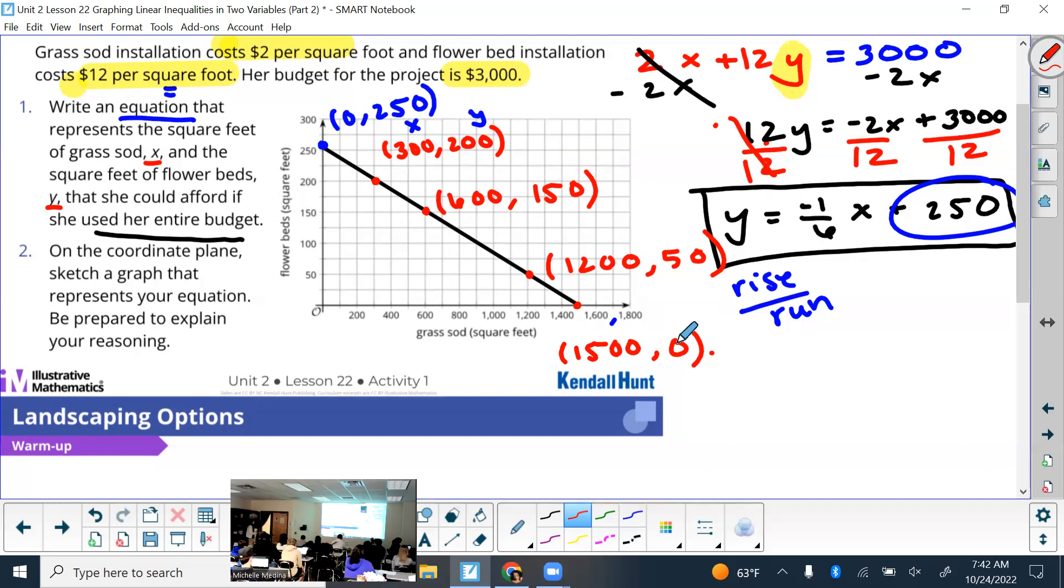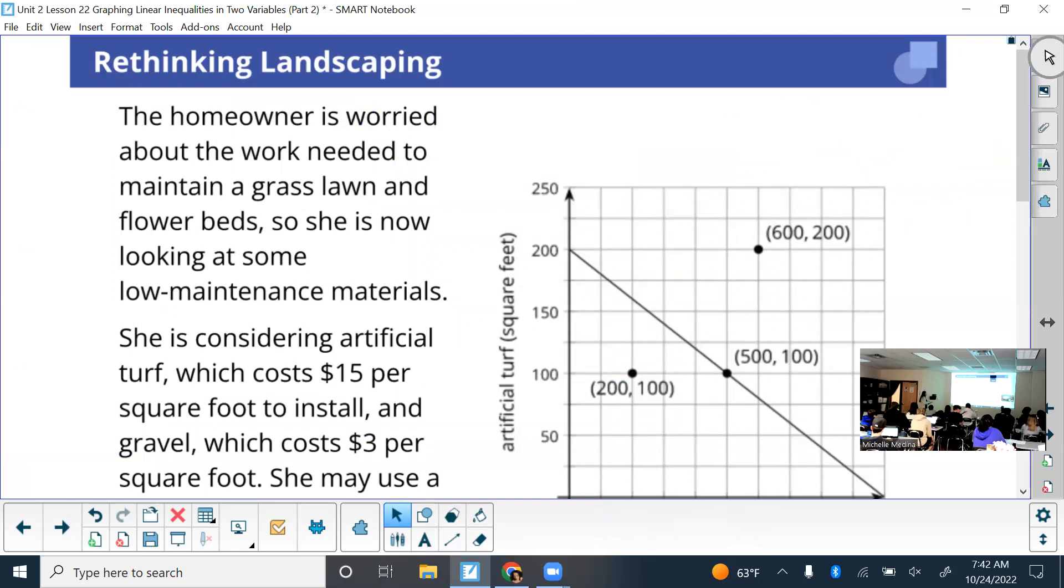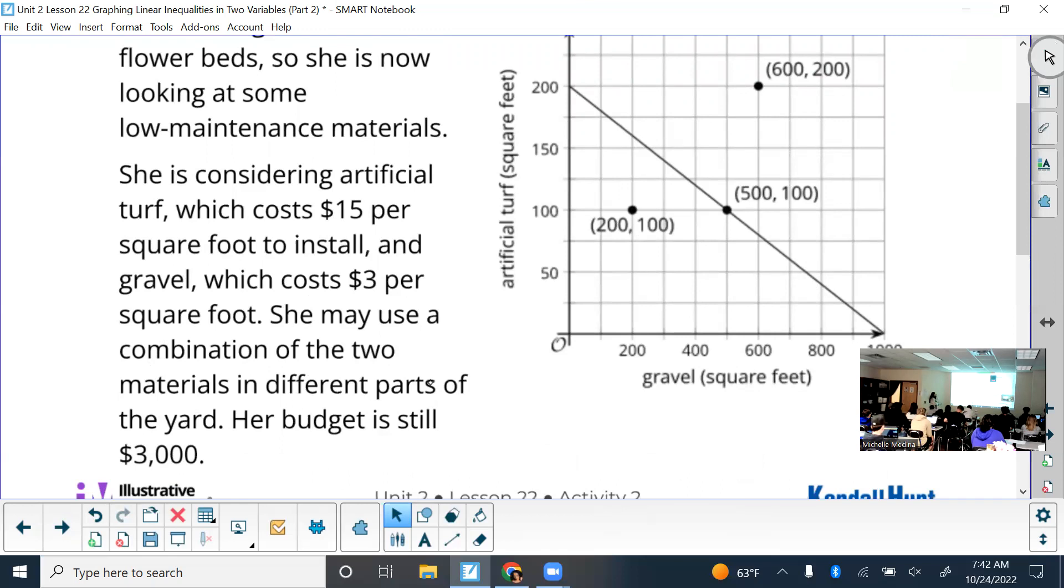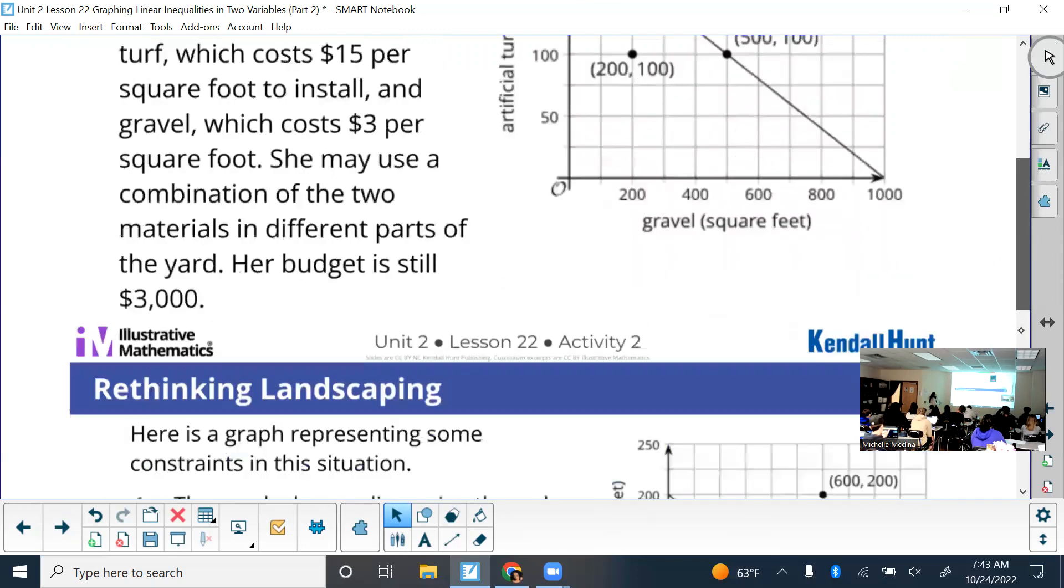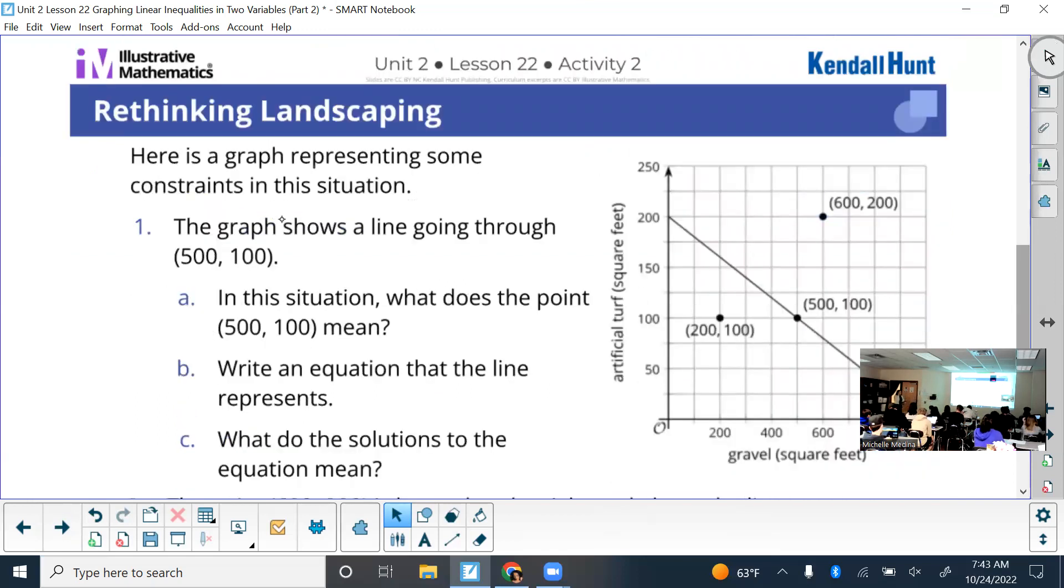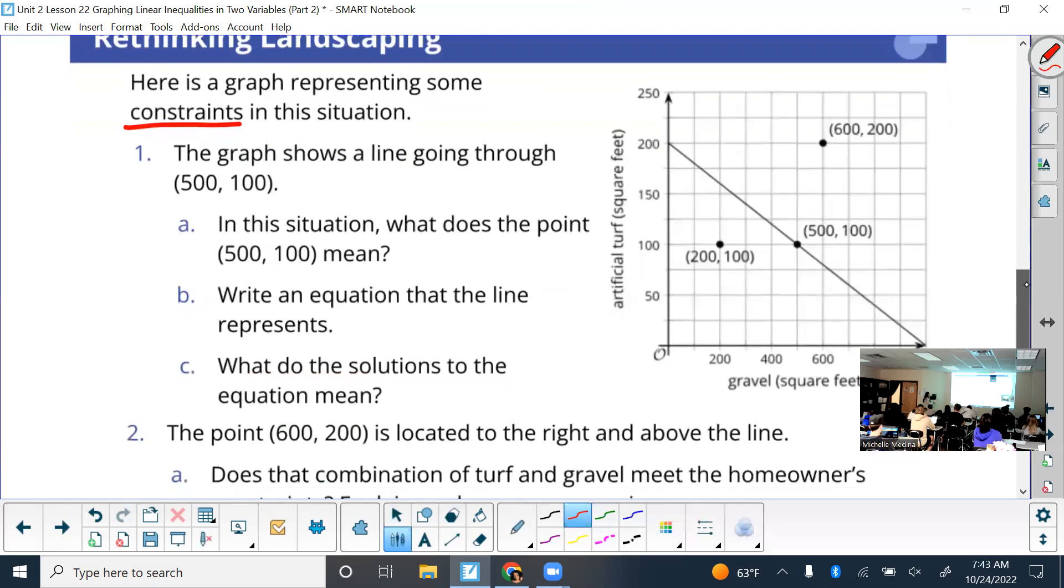So that's like the maximum number of grass. All right. Rethinking landscaping. So the homeowner is worried about the work needed to maintain a grass lawn and flower bed, so she is now looking at some low maintenance materials. She's considering artificial turf, which cost fifteen dollars per square foot to install, and gravel, which cost three dollars per square foot. She may use a combination of the two materials in different parts of the yard. Her budget is still three thousand dollars.